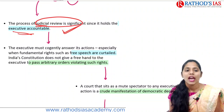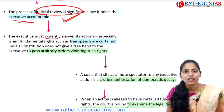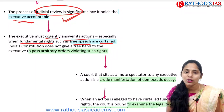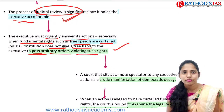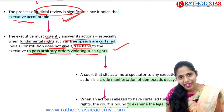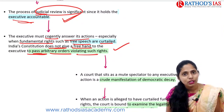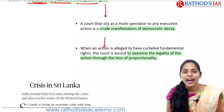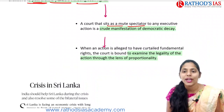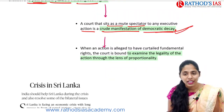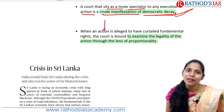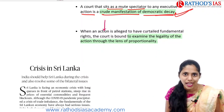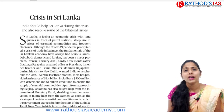The way forward: the process of judicial review is significant since it holds the executive accountable. We need transparency and accountability in the judiciary. The executive must cogently answer its actions, especially when fundamental rights such as free speech are curtailed. The Indian Constitution does not give the executive a free hand to pass arbitrary orders violating such rights. A court that sits as a mute spectator to executive action is a crude manifestation of democratic decay — it should not be allowed, and legality of action must be examined through the lens of proportionality.